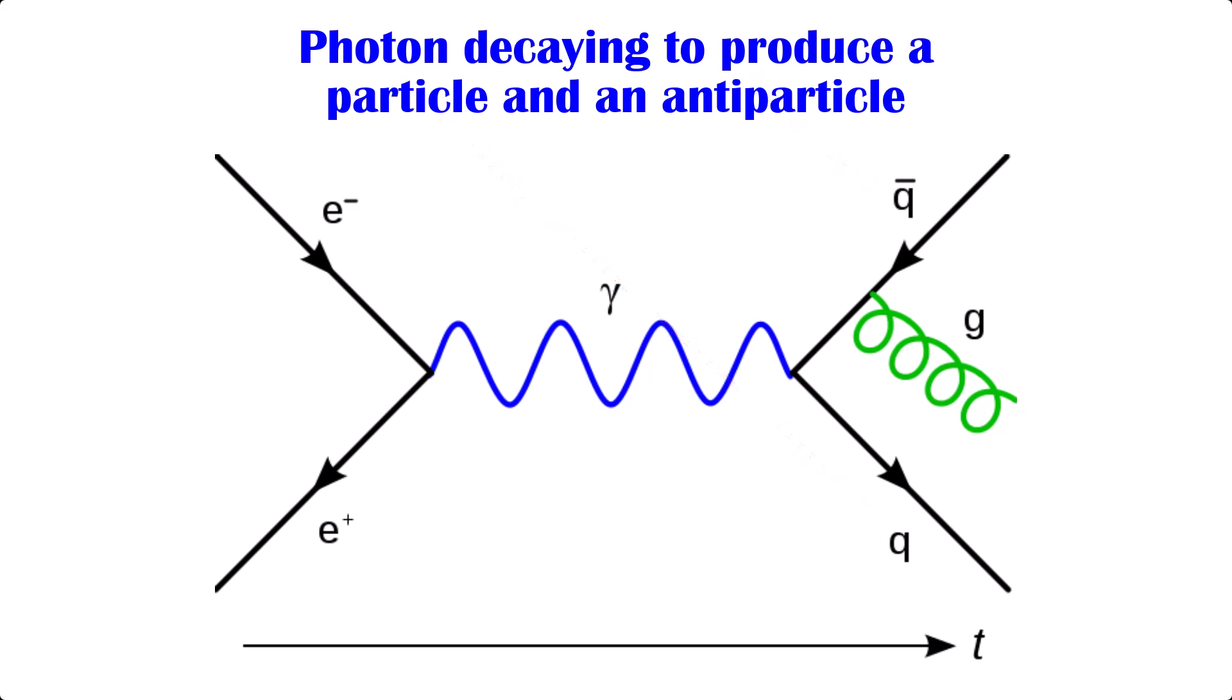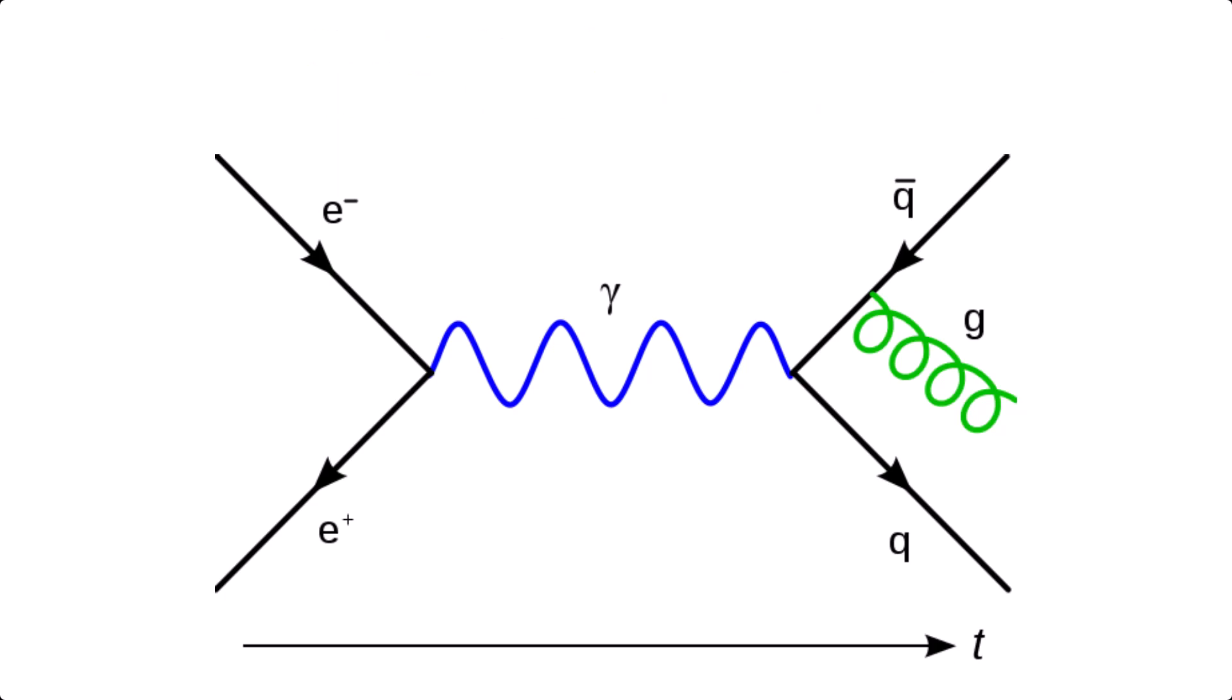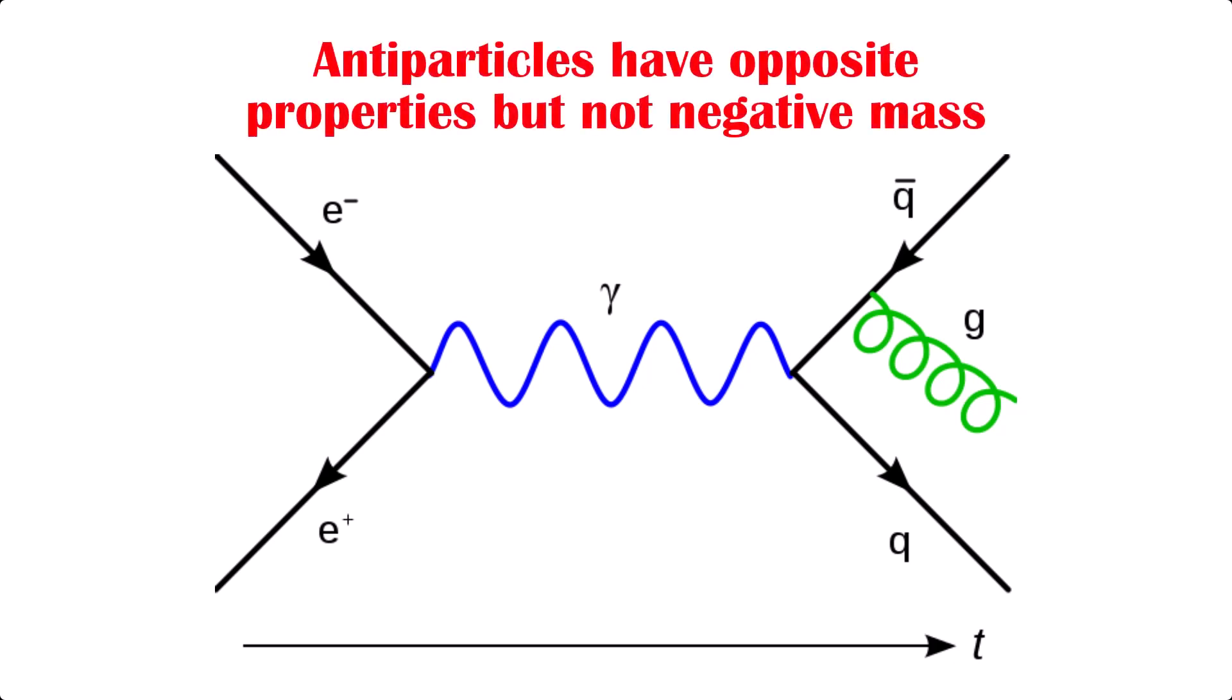Baryons are particles like protons or neutrons, made up of three quarks. But let's not gloss over what else is produced, an antiparticle. These have been experimentally observed and have the same properties as their matter partner, only opposite. For example, an antiproton has a baryon number of minus one and a charge of minus one,